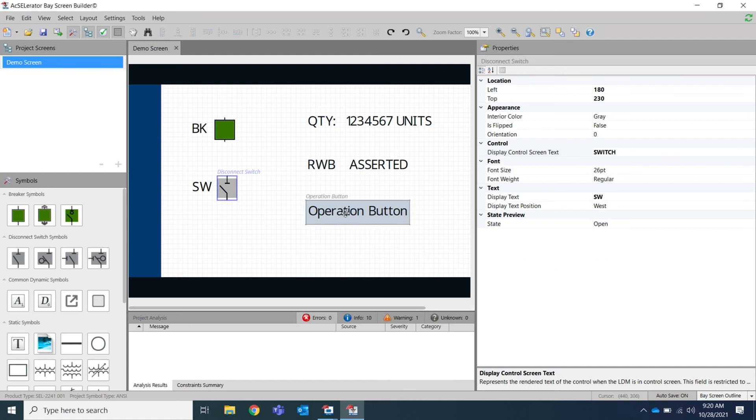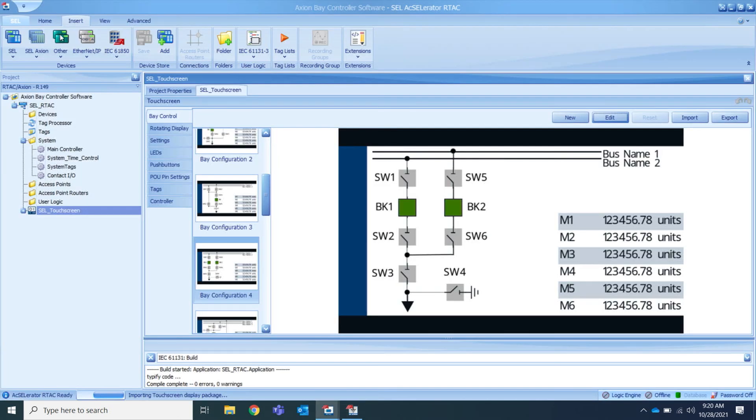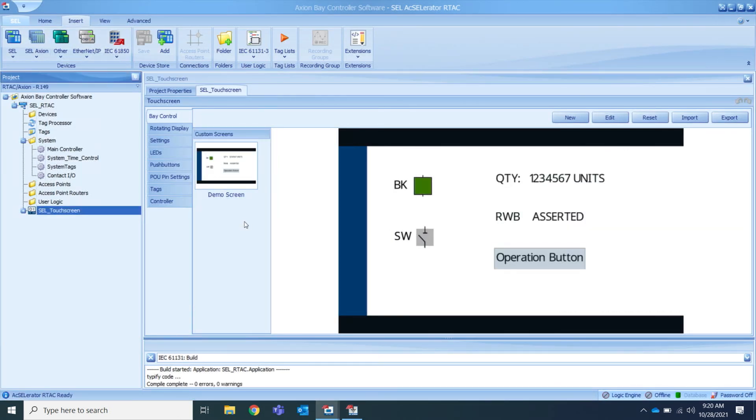Once you're satisfied with your screen design, press the Publish Package button, which sends these screen updates to Accelerator RTAC software. In Accelerator RTAC, we can now see our demo screen with those elements we just added. From here we could begin configuring our RTAC project settings.